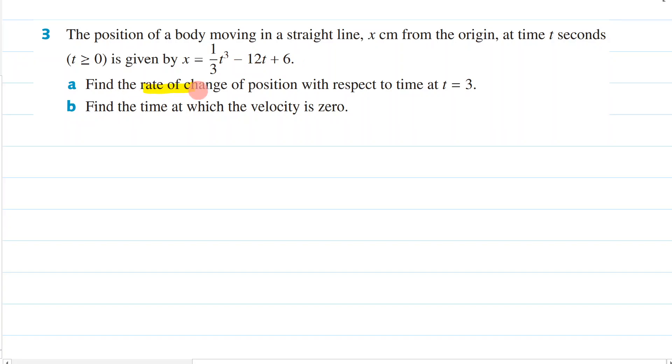Find the rate of change of position with respect to time at t equals 3. This question is trying to be tricky with you, because it's not using the word that we know. It's referring to the rate of change of position with respect to time.